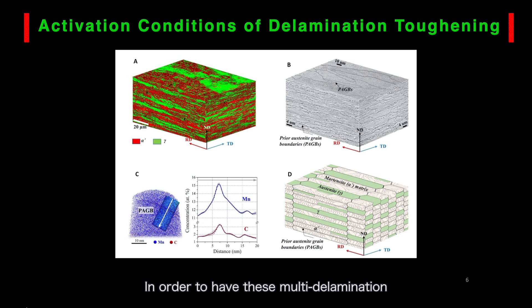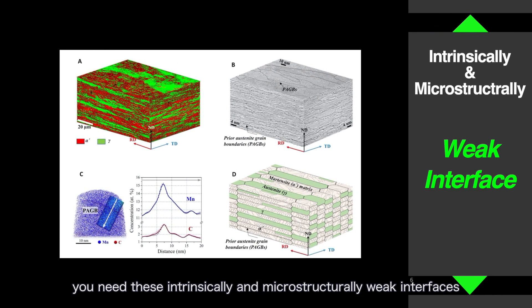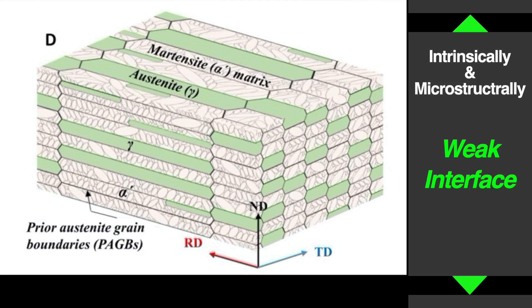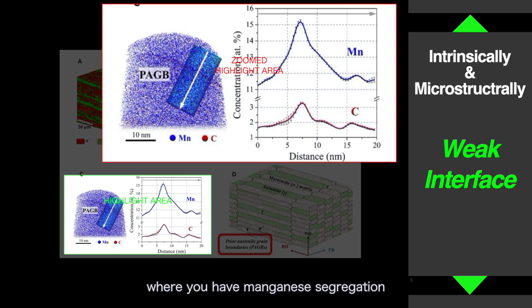In order to have this multi-delamination, you need intrinsically and microstructurally weak interfaces. The weak interface here is the prior austenite grain boundary, where you have manganese segregation at the prior austenite grain boundary.